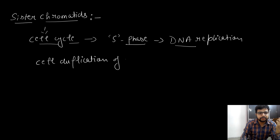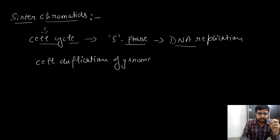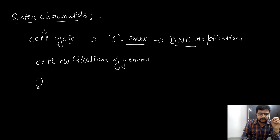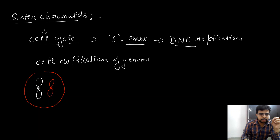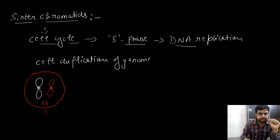DNA replication is the product for cell duplication of the genome. That means in DNA replication, the number of chromosomes present in a parent cell are getting duplicated. Suppose this is a chromosome and this is another chromosome — together they make 46 in a nucleus within the cell. We are taking this as a diploid cell, or we can also call it a parent cell.